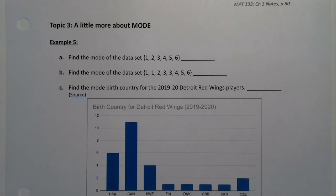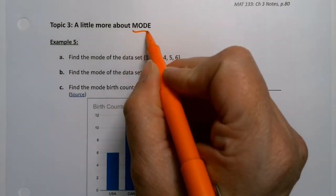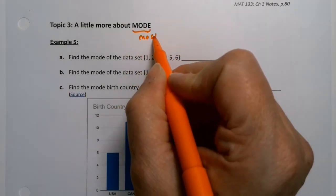We've ignored the mode a little bit, so now I want to spend a little bit of time just talking about the mode. The mode, remember, is the most frequent data point. That's what makes it a mode. It's most frequent.